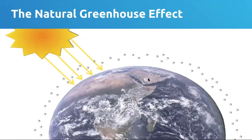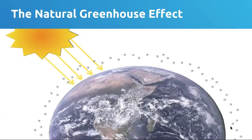The greenhouse effect is crucial on our planet. If we didn't have a natural greenhouse effect — gases in our atmosphere that absorb radiation emitted from the Earth after absorbing energy from the sun — we would actually have an average temperature on the planet below freezing: about negative 18 degrees Celsius, or approximately zero degrees Fahrenheit.